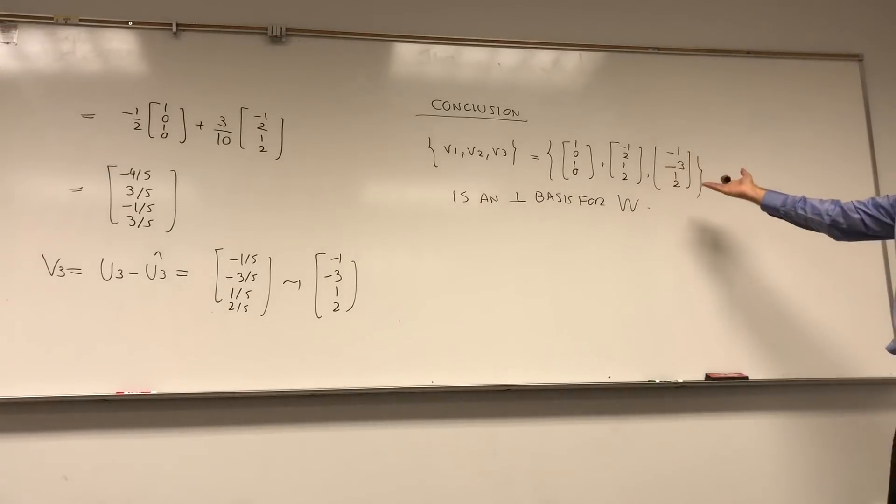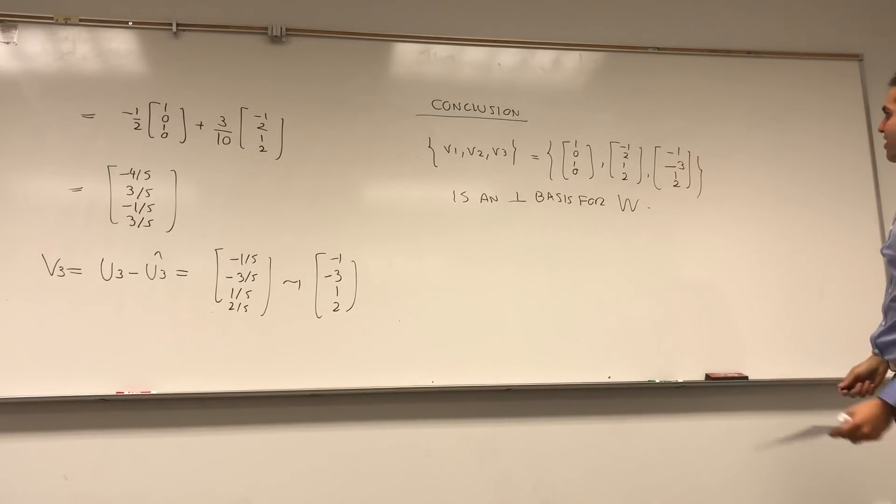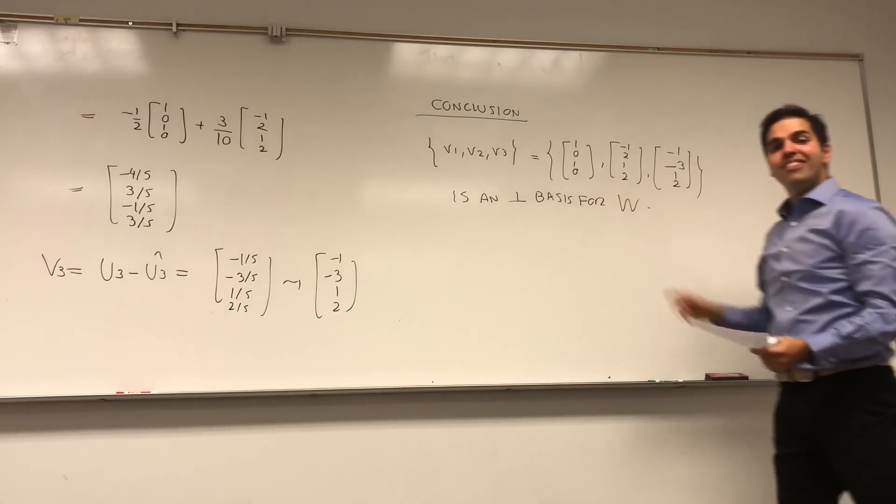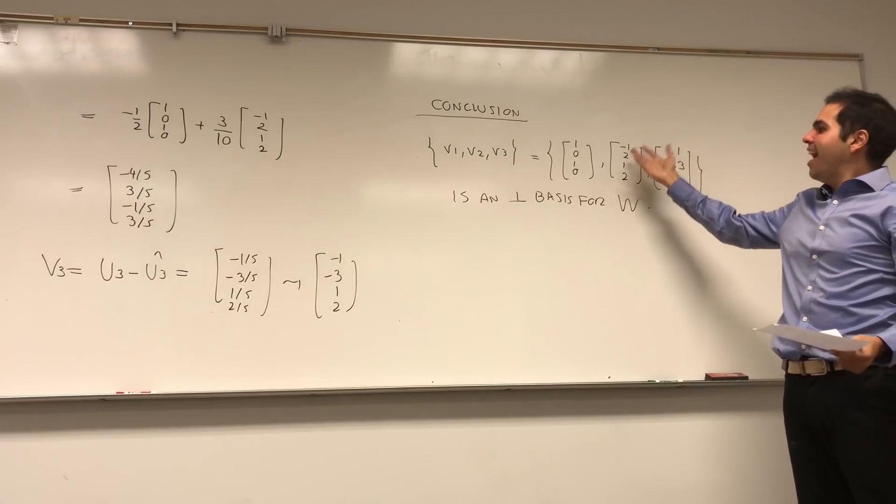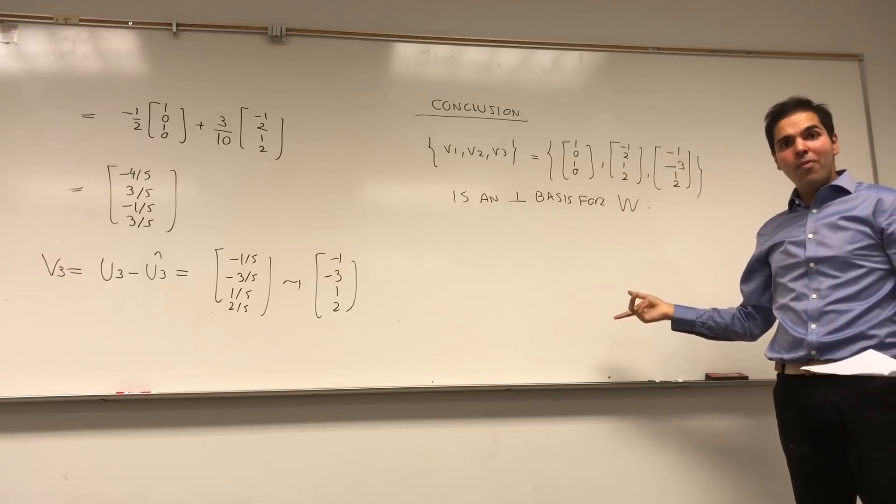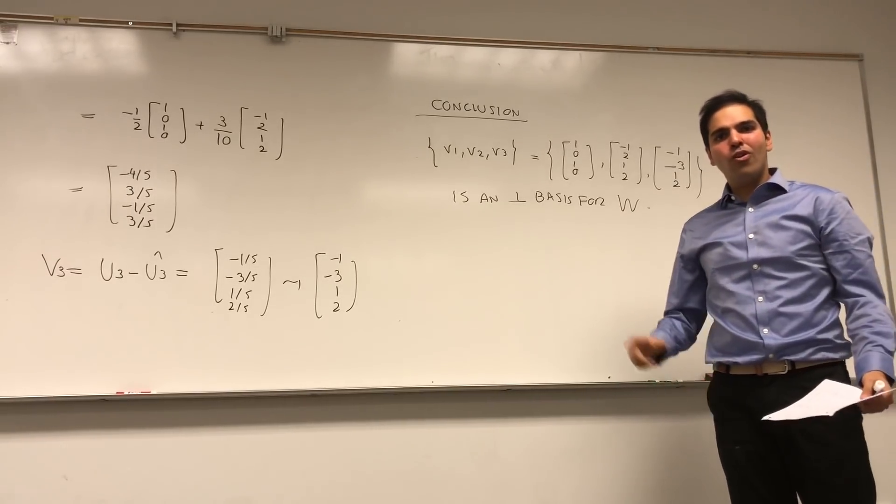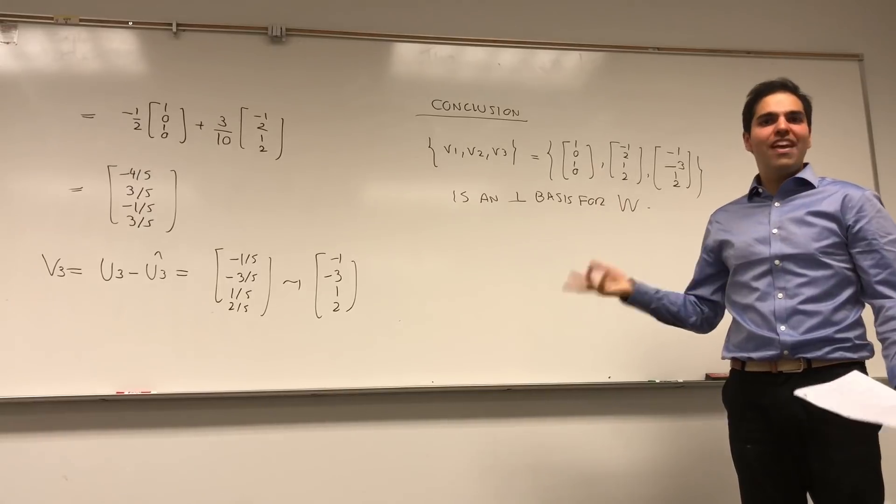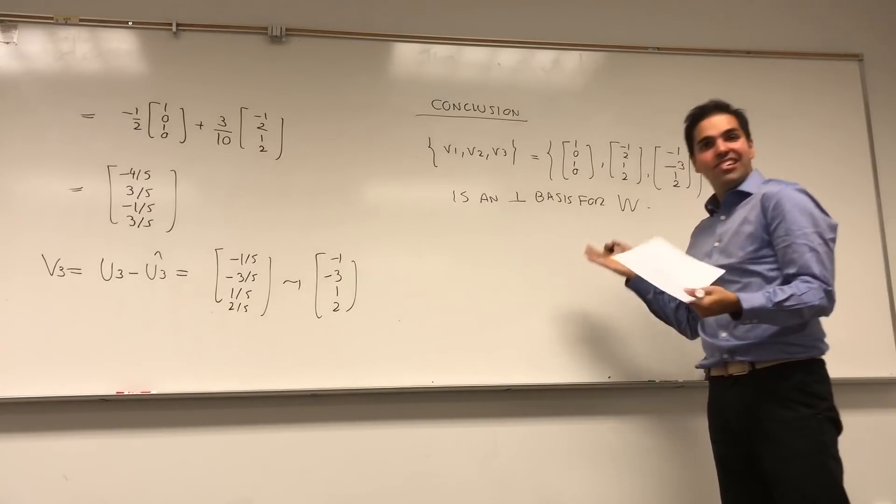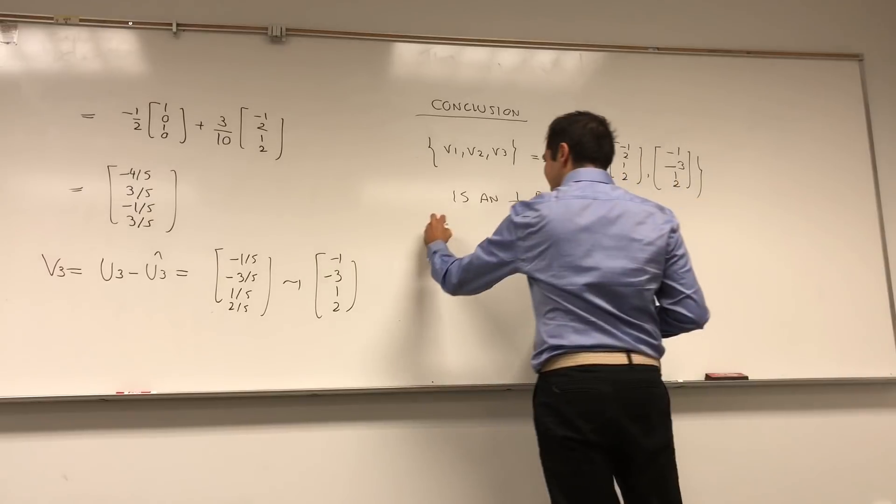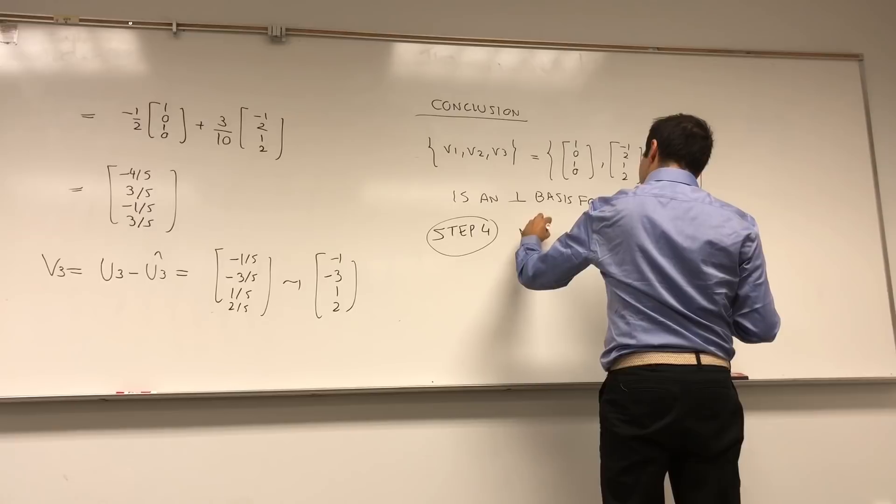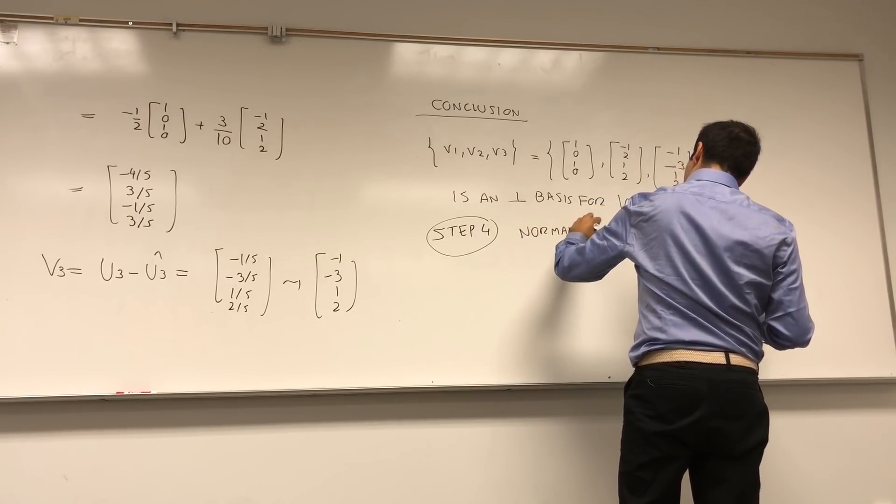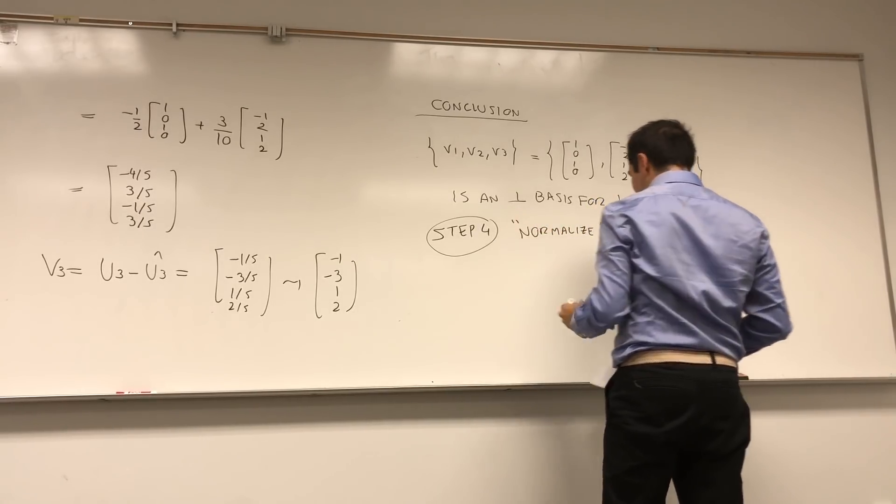And in fact, if you like, you can always check if it's indeed orthogonal. And we're almost done. Well, how do you find an orthonormal basis? And in case you don't know, orthonormal means each vector has length 1. Turns out it's the easiest thing, the easiest step of them all. Step 4: normalize.